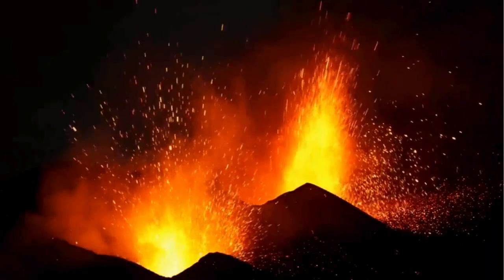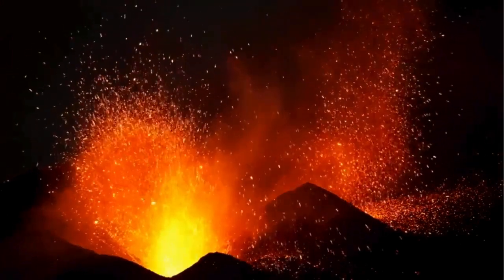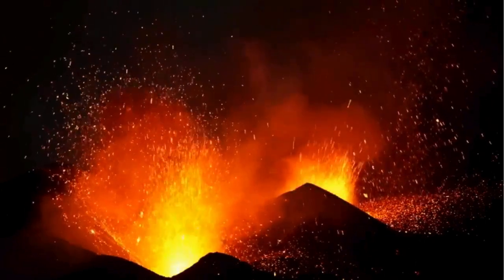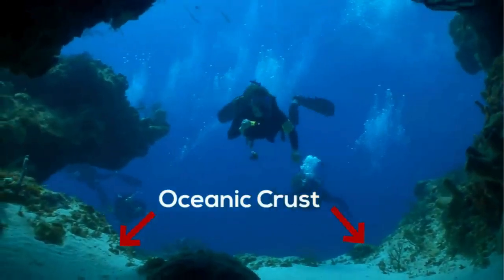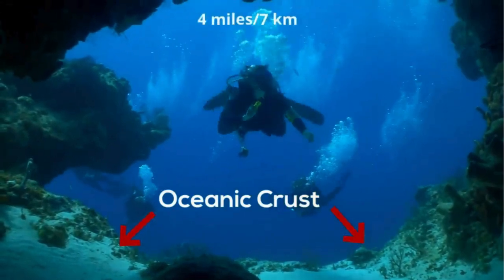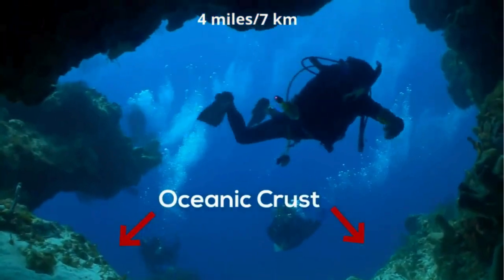The earth's crust contains all three rock types including igneous, sedimentary, and metamorphic. Oceanic crust lies under the ocean and is thin, approximately four miles or seven kilometers in thickness, and is composed of dense rocks including basalt.